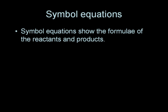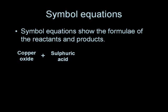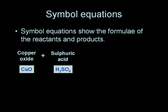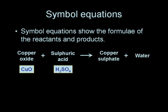Simple equations show the formulae of the reactants and products rather than using their names. So if we look at copper oxide plus sulphuric acid, the formulae are shown below. CuO is copper oxide and H2SO4 is sulphuric acid. In the case of the products, copper sulphate is CuSO4 and water is H2O.